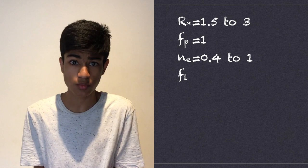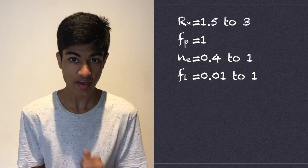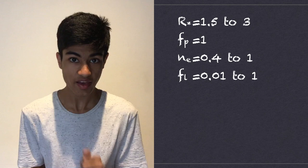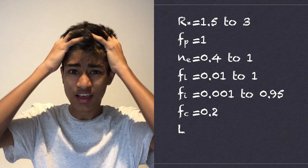Like I said before, they're both heavily debated. So we'll take fairly inclusive ranges of 0.01 to 1 for Fl, and 0.001 to 0.95 for Fi. Fc is another tricky one — let's use Drake's original estimate of 0.2. And for L, let's take a range of 10,000 to 10 million years for simplicity.